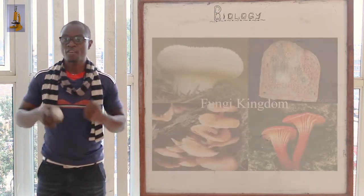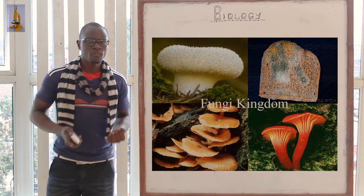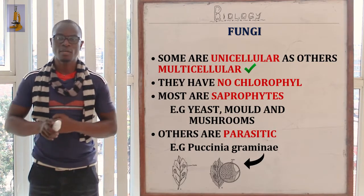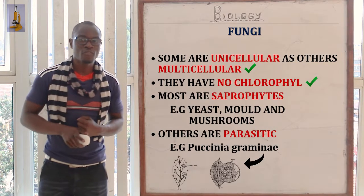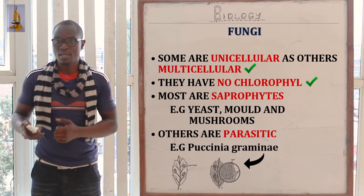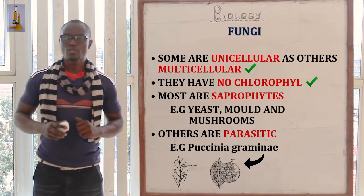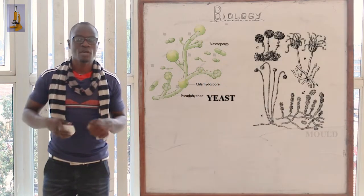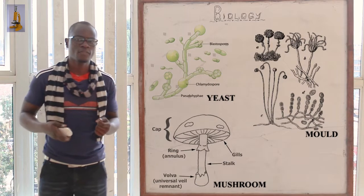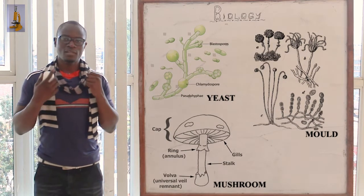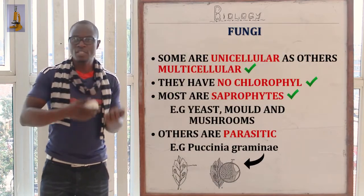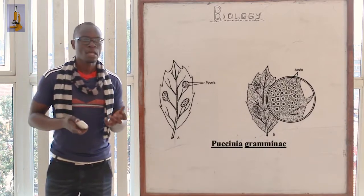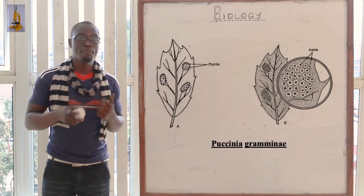The next kingdom is kingdom Fungi. In kingdom Fungi, some organisms are unicellular while some are multicellular. These organisms don't have chlorophyll — they behave like plants but don't have chlorophyll. Most of these organisms are saprophytes. Examples include yeast, molds, and mushrooms. Some behave saprophytically while some are parasites, for example Puccinia graminis, which behaves as a parasite.